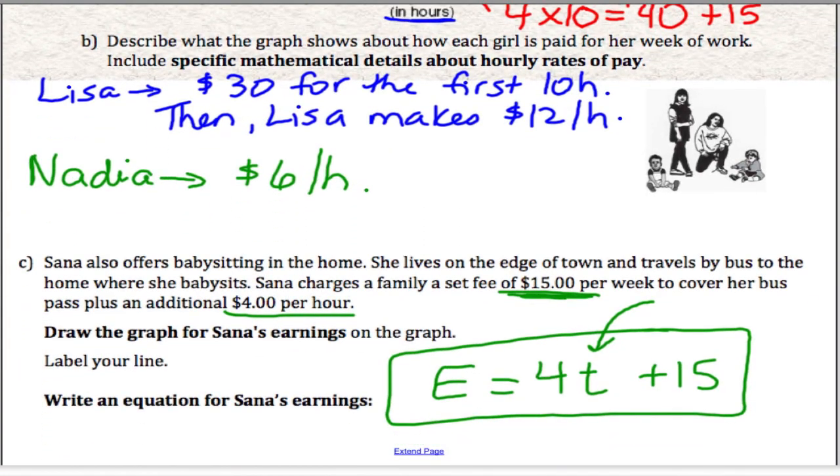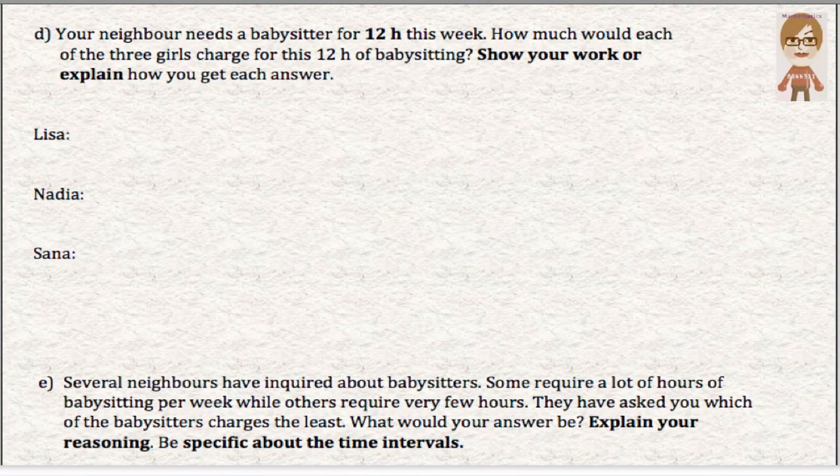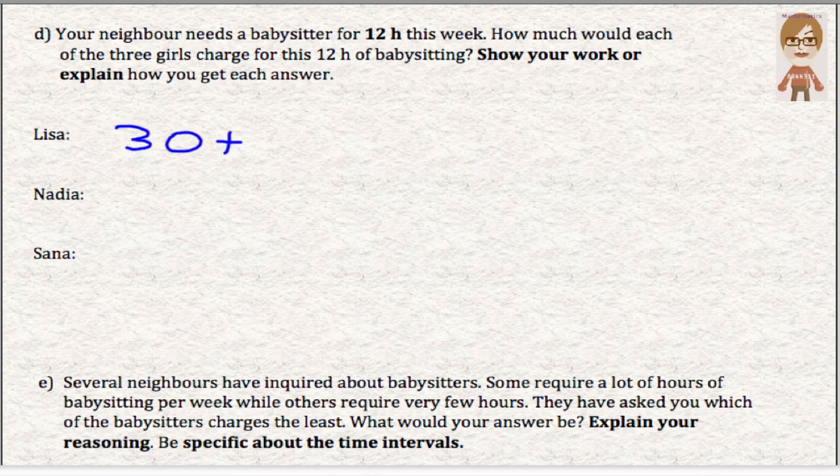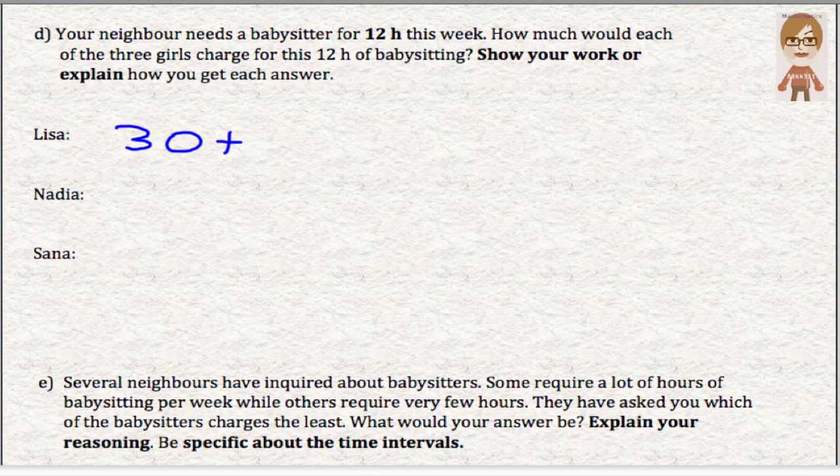So on the back of this page, it asks you to try and figure out how much 12 hours would cost from each girl. So each girl charges differently. Remember Lisa. Lisa charges $30. And then after 10 hours, she starts charging $12 an hour. If she's going to work for 12 hours, it makes sense that that's an extra two hours that she hasn't charged for yet.